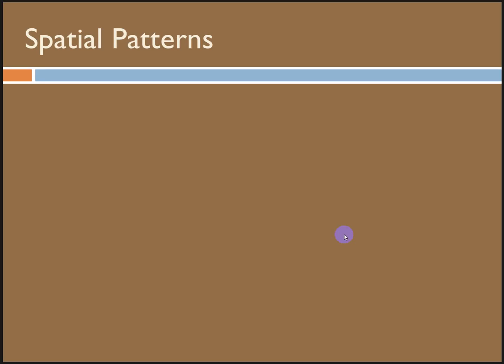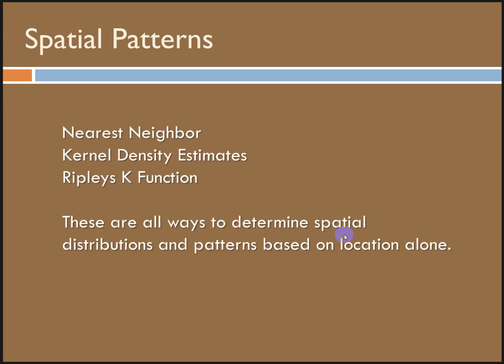Nearest neighbor and kernel density estimates can be used to determine spatial distributions based on the location alone. Next, we want to discuss tools that will help us understand the degree to which near and distant things are related based on the similarity of their attributes or values associated with those locations. We're going to add a new dimension.